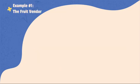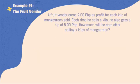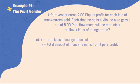Example Number 1: The Fruit Vendor. A fruit vendor earns 2 pesos as profit for each kilo of mangosteen sold. Each time he sells a kilo, he also gets a tip of 5 pesos. How much will he earn after selling X kilos of mangosteen? First, let's define some variables. Let X be the total kilos of mangosteen sold, and let Y be the total amount of money he earns from tips and profit.